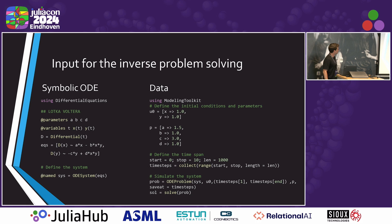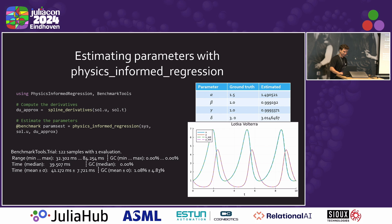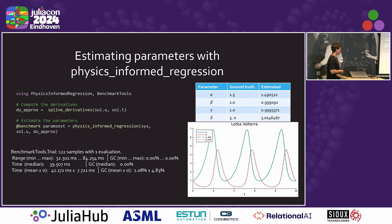I assume most people know how to set up dynamic models with differential equations, so I won't go into that. With this new symbolic framework it's very clean. My package is essentially just two lines of code: one to approximate the derivative from the data, and another which is the regression algorithm that takes as input the symbolic model as defined on the previous slide, the vector of states for each time point, and the corresponding derivatives.